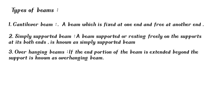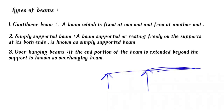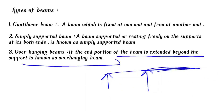Next, overhanging beam. If the end portion of the beam extends beyond the support, it is called an overhanging beam. It can overhang on one or two sides.